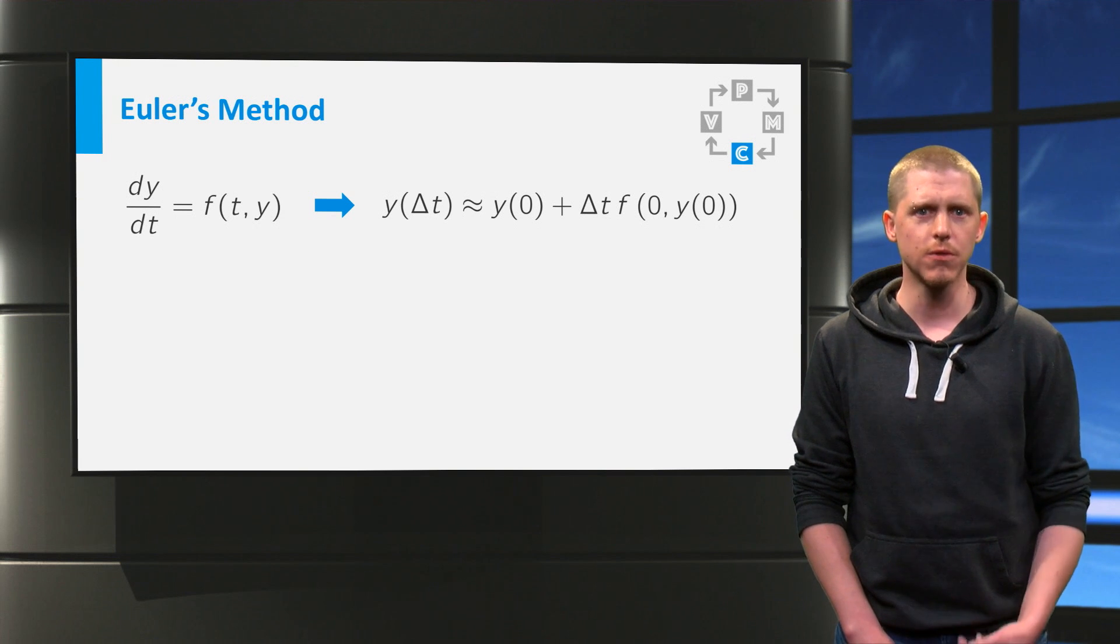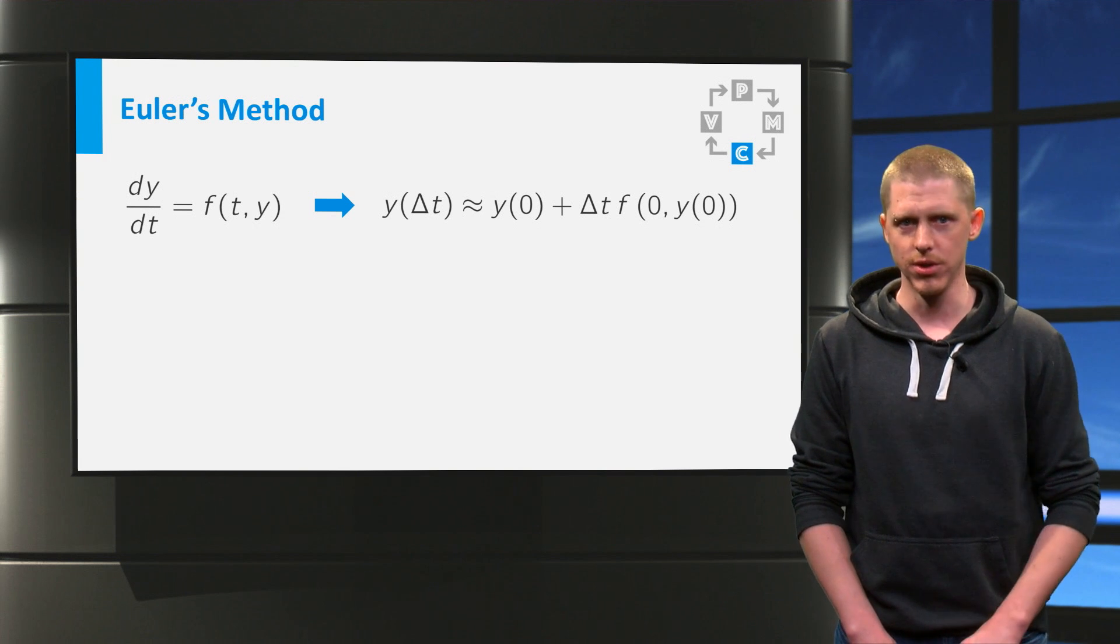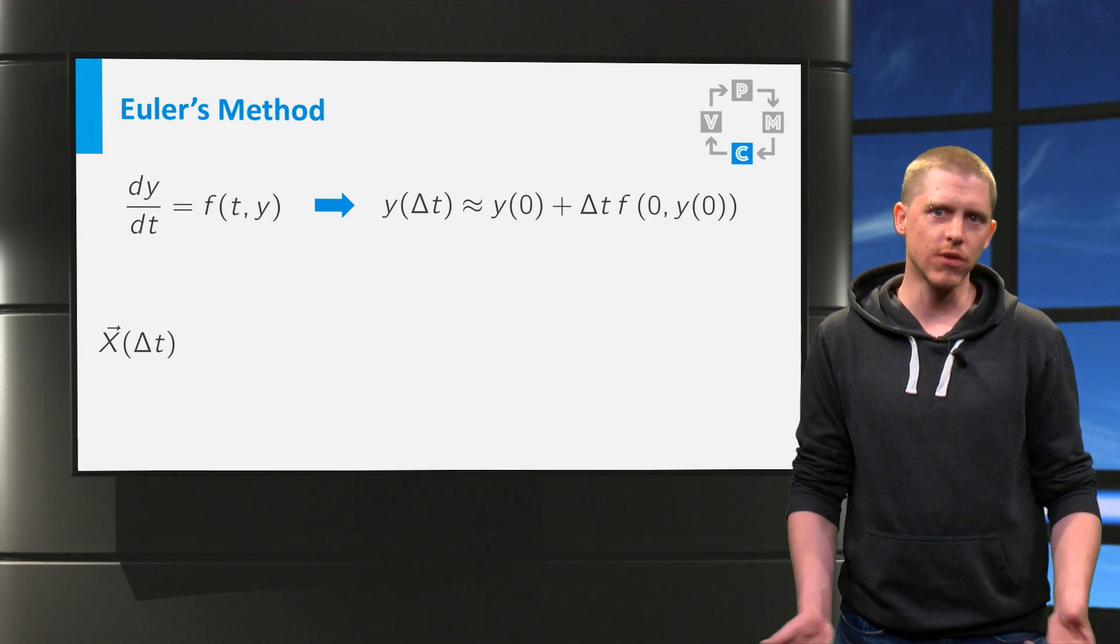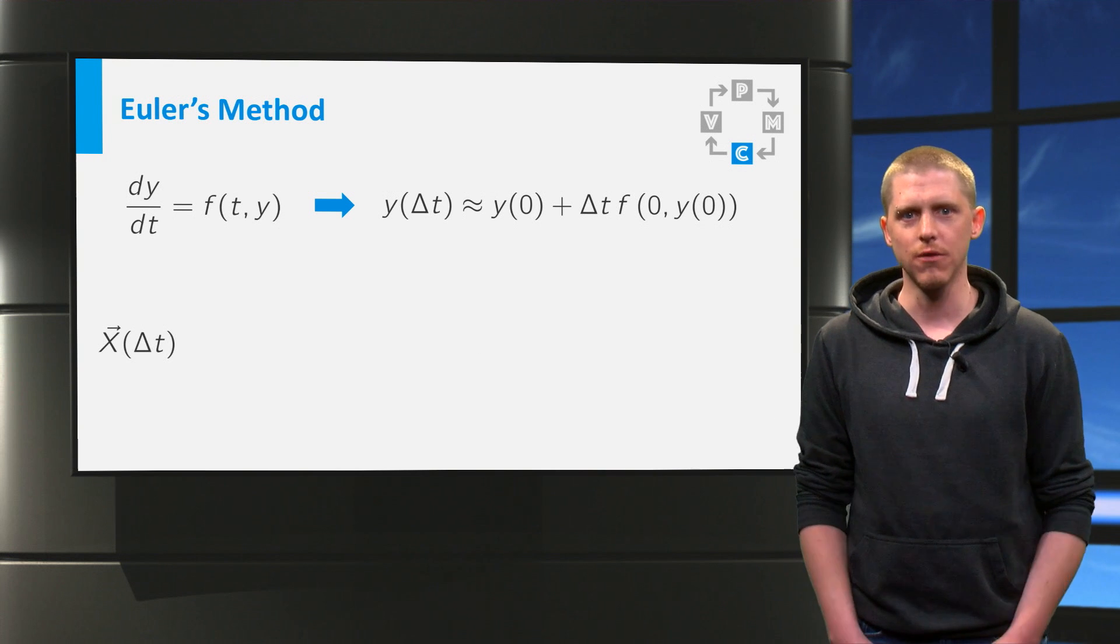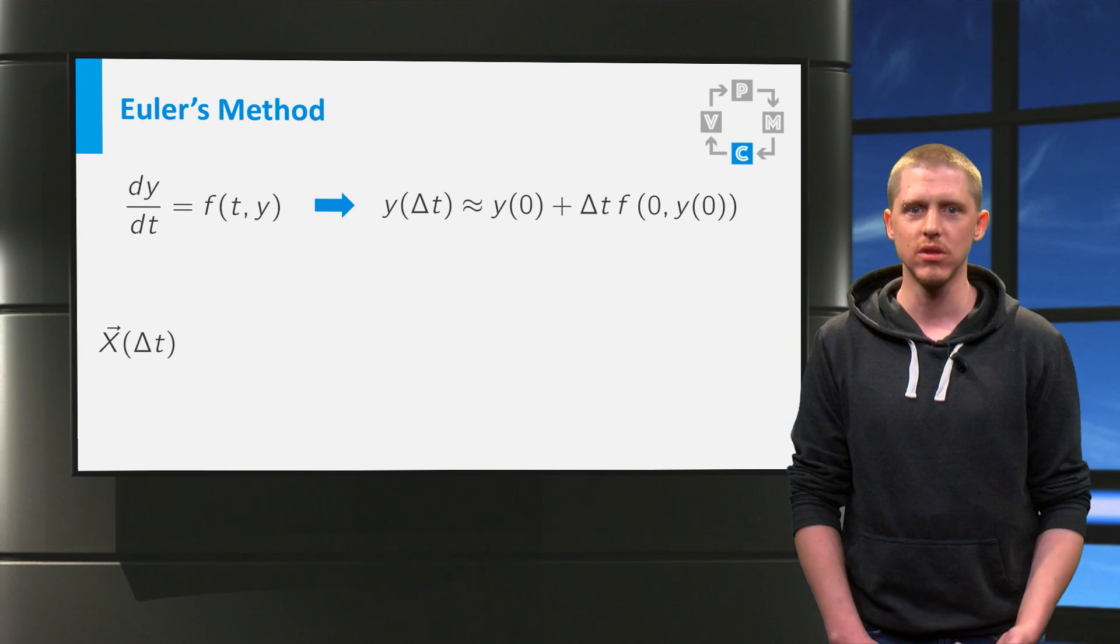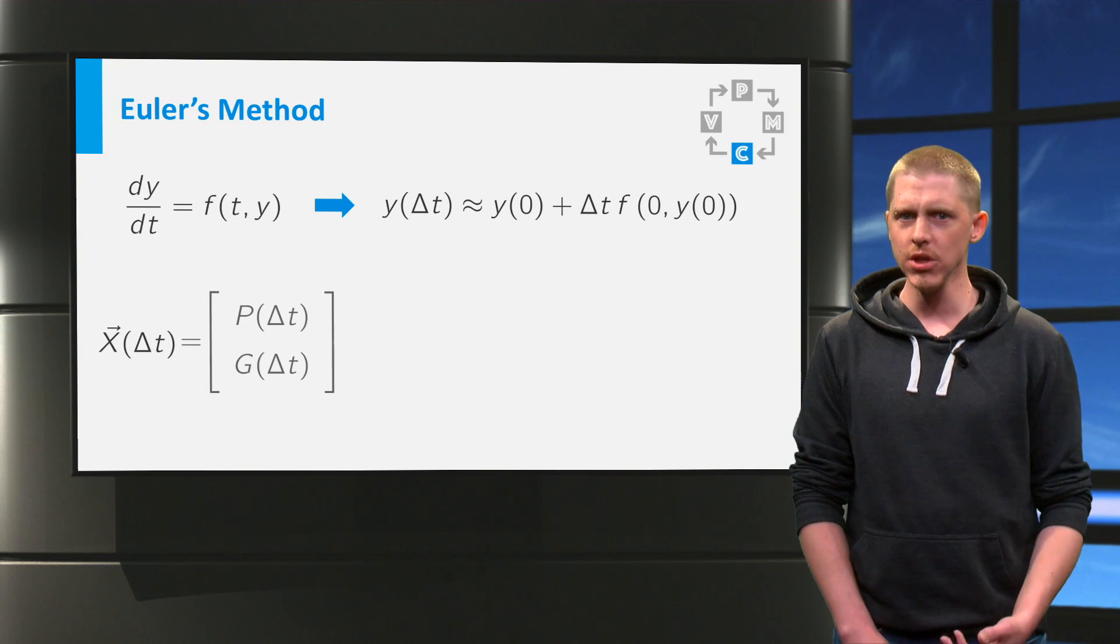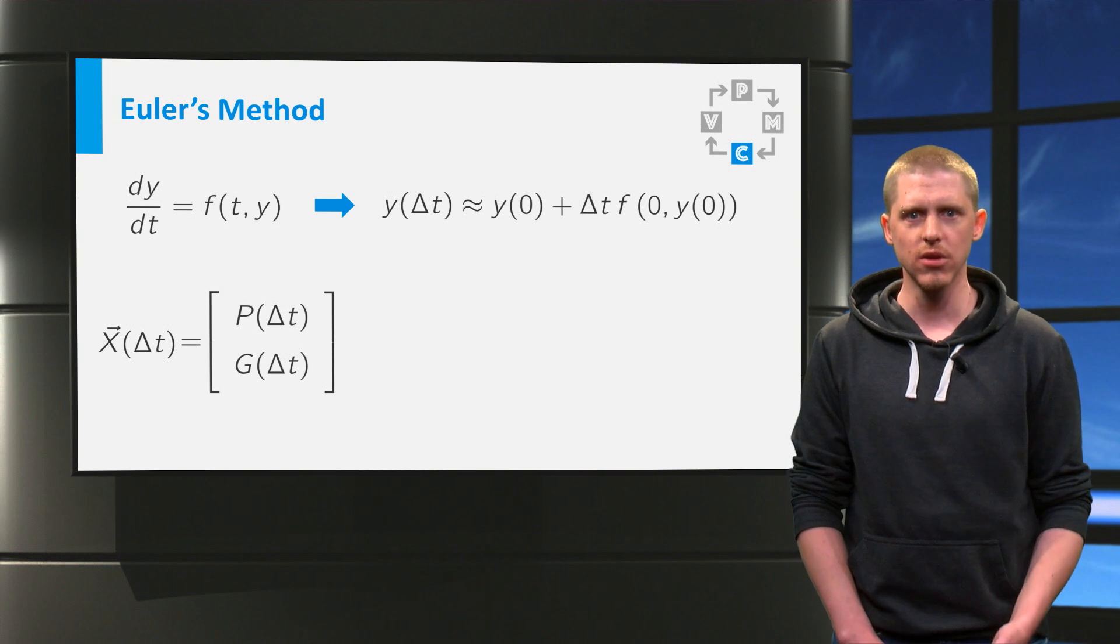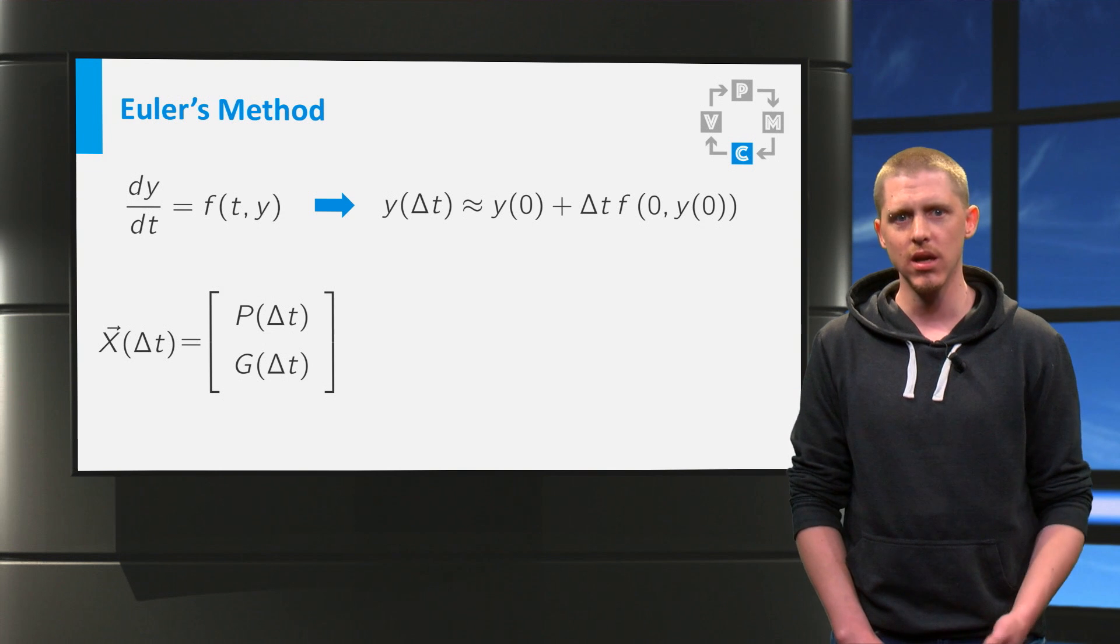So how can we use this for our vector differential equation? Let us just try something and calculate x after one time step of size Δt. The definition of x gives that this is a vector containing p and g at time Δt.